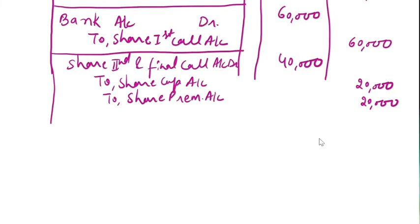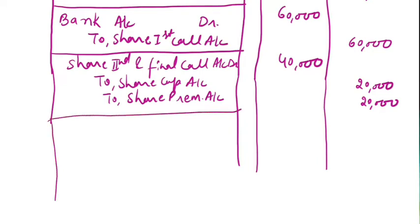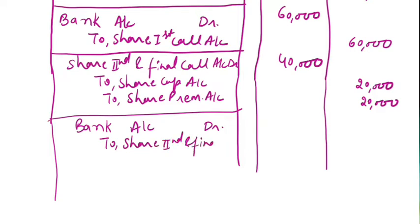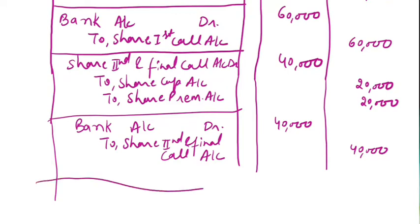We will now receive the final call money. Bank Account debit to Share Second and Final Call Account — rupees 40,000 received. Narration: Being share second and final call money received with premium. This completes the solution of the first problem.